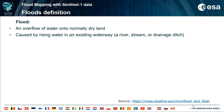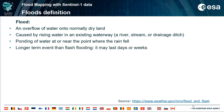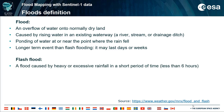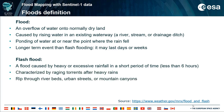A flood is an overflow of water onto normally dry land, which is the inundation of a normally dry area caused by rising water in an existing waterway such as a river, stream, or drainage ditch. It is the ponding of water at or near the point where the rain fell. Flooding is a longer-term event than flash flooding and may last days or weeks. A flash flood is a flood caused by heavy or excessive rainfall in a short period of time, generally less than six hours. Flash floods are usually characterized by raging torrents after heavy rains that rip through river beds, urban streets, or mountain canyons, sweeping everything before them.